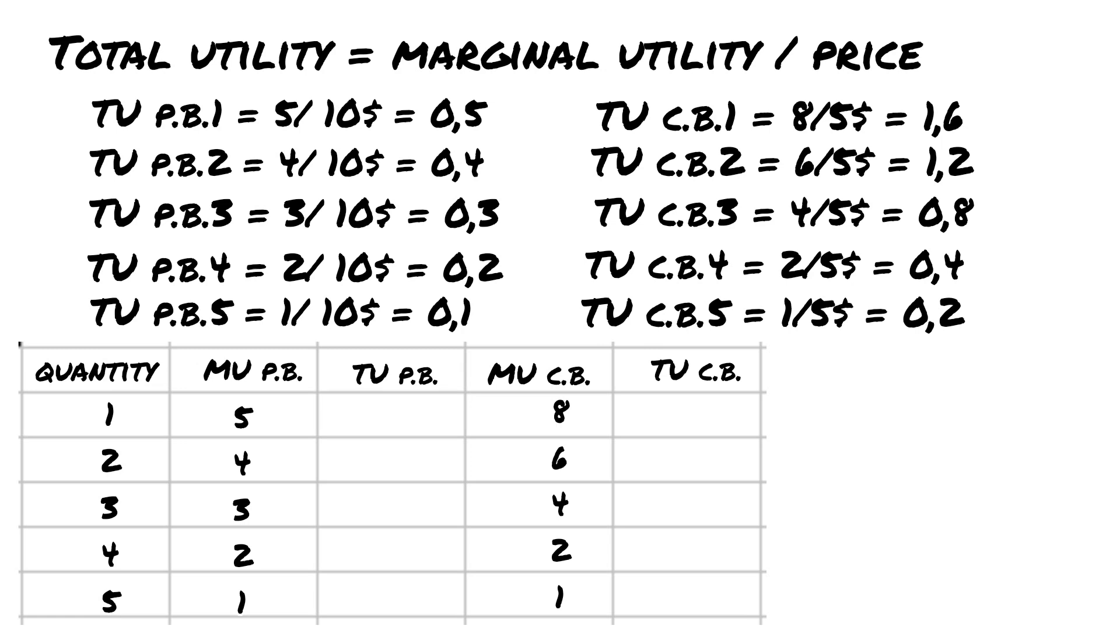In our case, this rule will be achieved if we buy 2 packages of peanut butter and 4 bars of chocolate. The other combinations will not meet the rule of marginal utility or is beyond our budget.